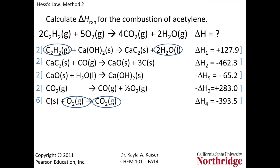In this approach, first identify the products and reactants of the goal reaction among the proposed reaction steps. Make sure that the products appear on the right side of each step and that the reactants appear on the left side. If you need to reverse the direction of a reaction step — in this example, reactions 3 and 5 had to be reversed — then remember to change the sign of the enthalpy for that step. This is because if a reaction in the forward direction produces heat, then when run in reverse it should consume heat, and vice versa.